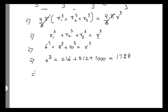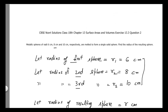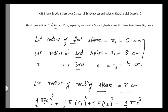So r³ = 1728. Taking the cube root of both sides, r = 12 cm. That is the radius of the resulting sphere. That's it for Question Number 2 of Chapter 13, Surface Areas and Volumes, Exercise 13.3. In the next video we will cover Question Number 3. See you, thank you.